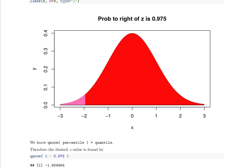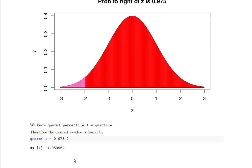Therefore the Z value that we're looking for can be found as the Q norm of 1 minus 0.975, or in other words a negative 1.95 and so on.